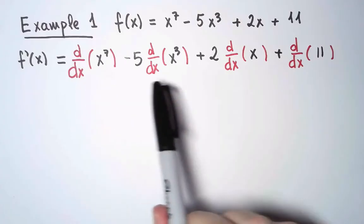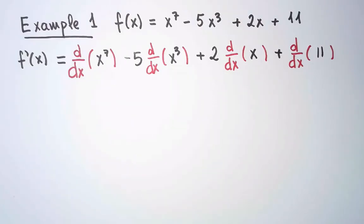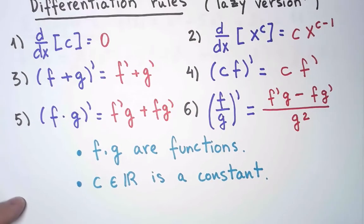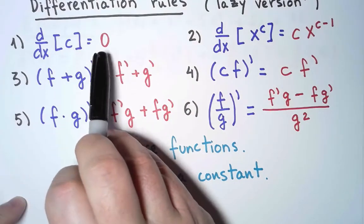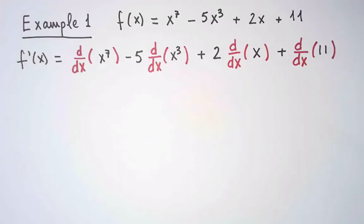Now, each of the individual functions is either a constant or a power. The derivative of a constant is zero, and I have a formula for the derivative of a power. Let's use them.